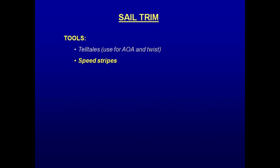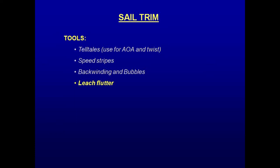If the forward section of the main has a bubble or backwinds, the slot needs to be opened up slightly. If a sail's leech is fluttering, an adjustment of the leech cord may be called for. The masthead fly is an important tool when sailing off the wind.